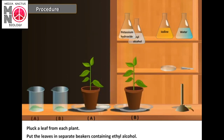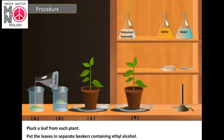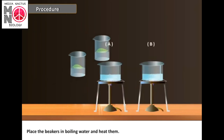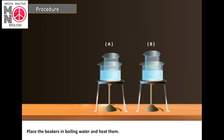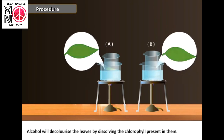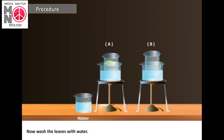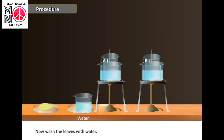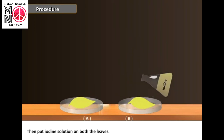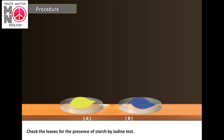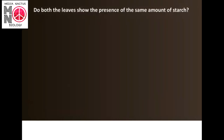Keep the plants in sunlight for about two hours. Pluck a leaf from each plant and put the leaves in separate beakers containing iodine alcohol. Place the beakers in boiling water and heat them indirectly. Alcohol will decolorize the leaves by dissolving the chlorophyll present in them. Wash the leaves with water and place them in separate petri dishes. Test both leaves A and B with iodine to check for the presence of starch. Do both leaves show the same amount of starch?